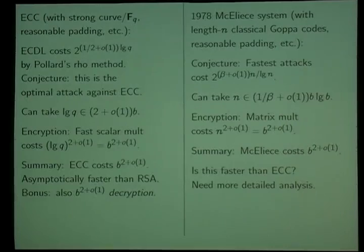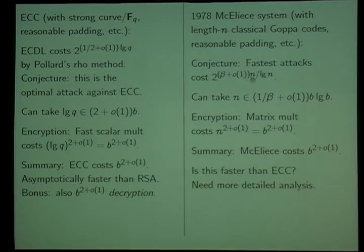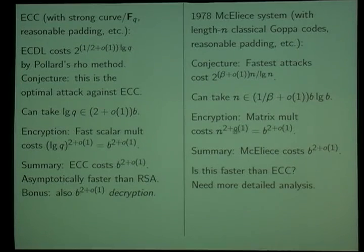Another conservative system that's been studied a lot and been around for a while is the McEliece code-based system. There are all sorts of ways you can vary this system which can get you in trouble, just like for ECC and RSA. But if you take conservative choices that have been studied a lot, the best attacks against this system take time — in terms of some code length N — they take time 2 to some constant N over log N. If you want that to be at least 2 to the B, then N should be some constant times B log B. The encryption operation is a very easy matrix multiplication taking time N squared, along with some padding which also fits in N squared. So McEliece at first glance is very similar to elliptic curve cryptography in speed — N squared where N is like B log B — and at this level of detail you can't actually tell which is asymptotically faster.